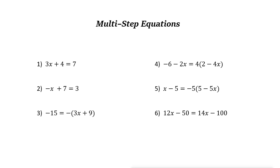Let's take a look at some examples. In this example, it says 3x plus 4 equals 7. The first step: all the variables are on one side of the equation — we only have 3x here. So all variables are on one side.